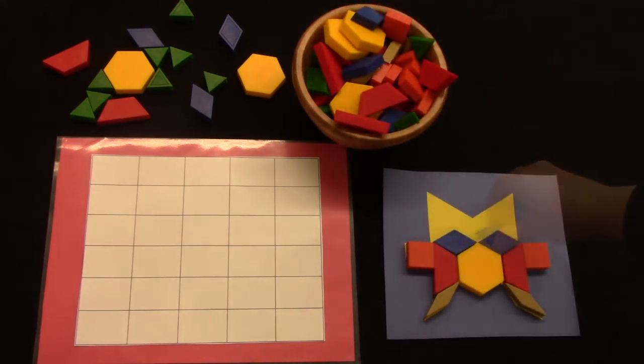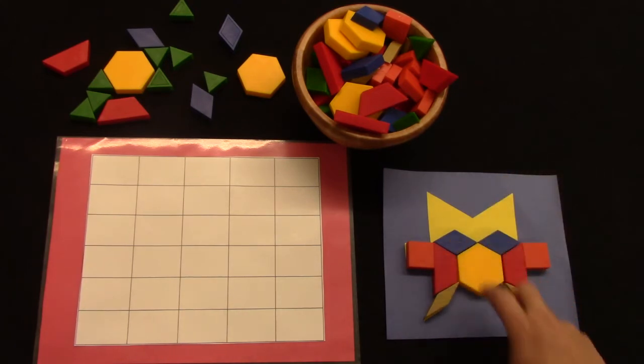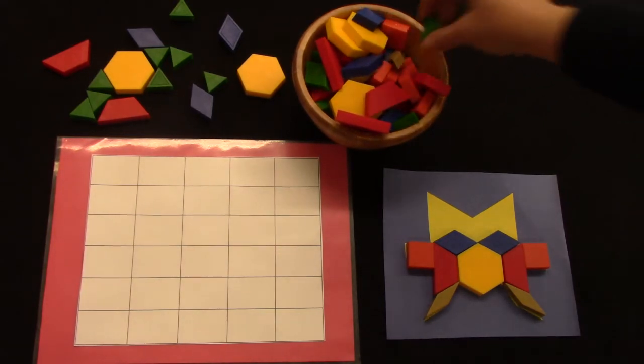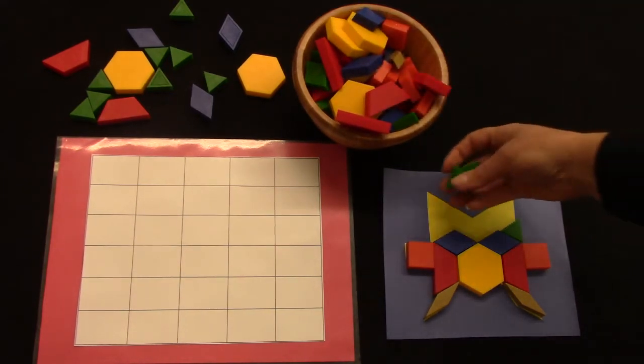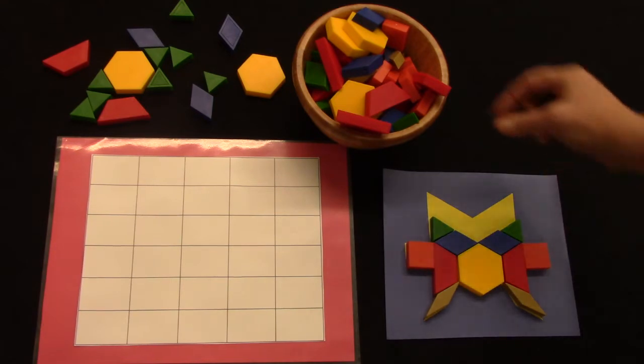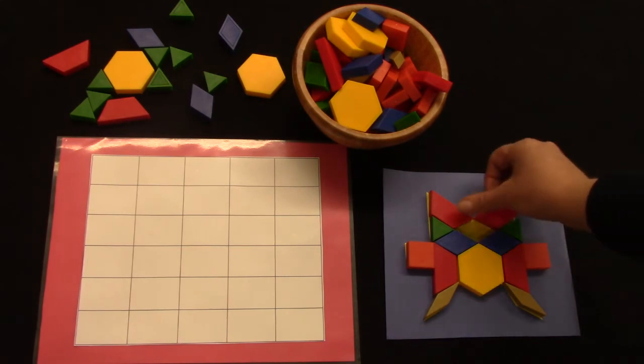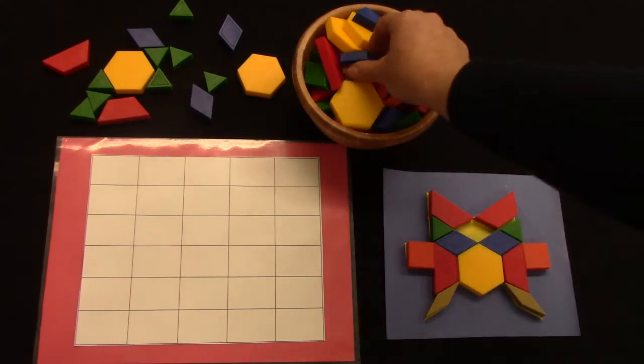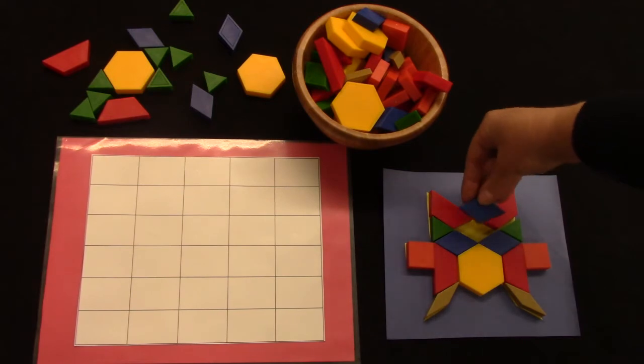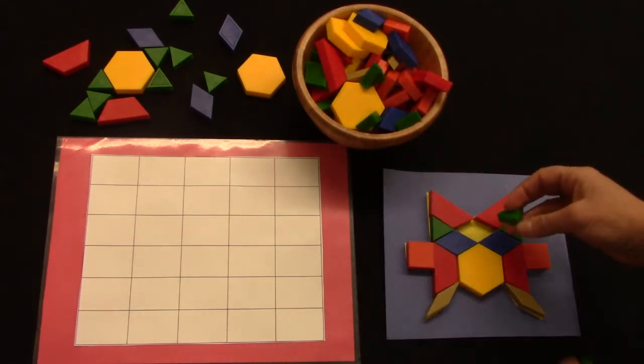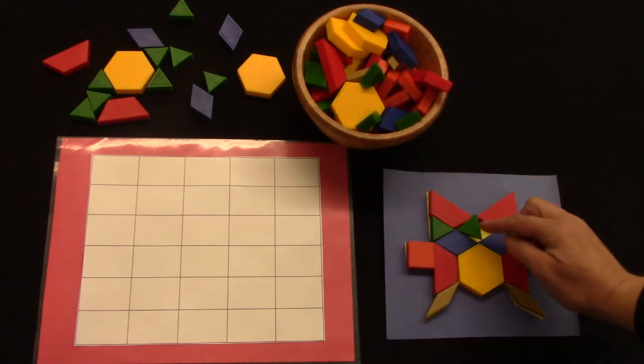I think now this looks like a funny man with blue eyes and a big nose and a crazy mustache. My design needs some triangles. I'm gonna add some triangles right there. Maybe I'll put some trapezoids here. I have a little space here in the middle. It looks like it would be just the right size for a rhombus, but I think instead I am gonna fill that space with triangles.